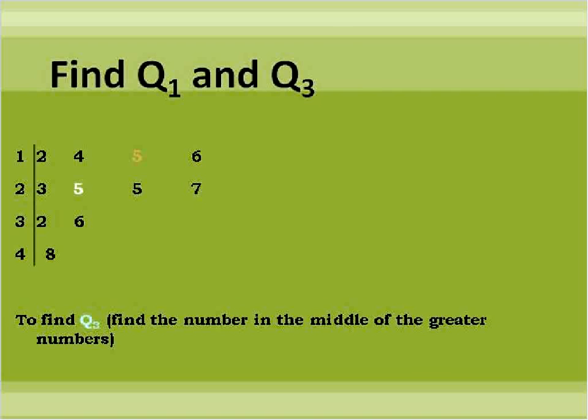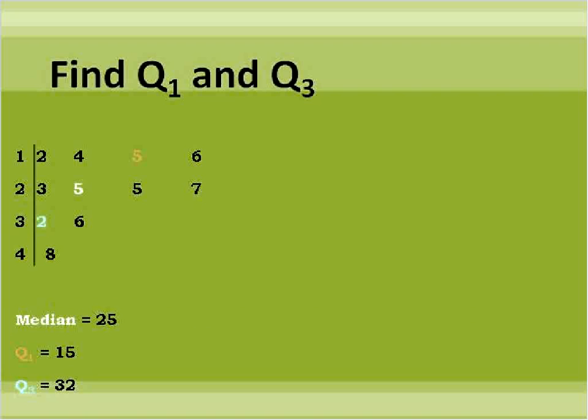We do the same to find Q3. We look at all the numbers that are greater than the median. So 1, 2, 3, 4, and 5. There's 5 above that median. So we would pick the third number above. In other words, 32 right there. So to kind of lay it out this way, the median would be 25. Q1 is 15. And Q3 would be equal to 32.